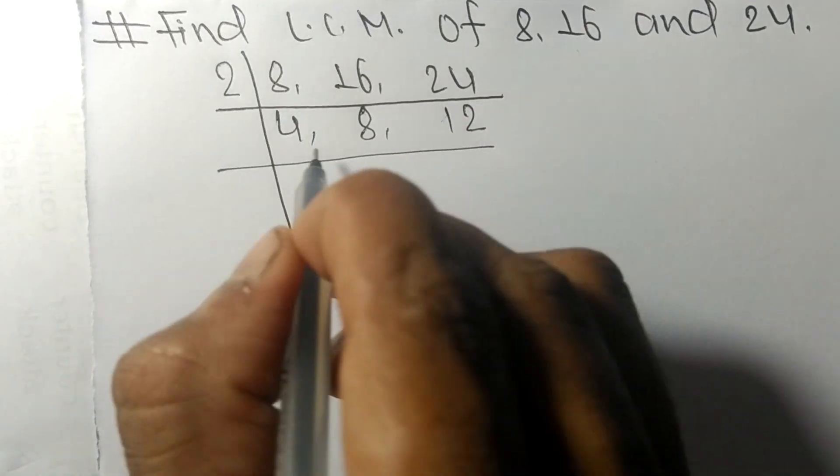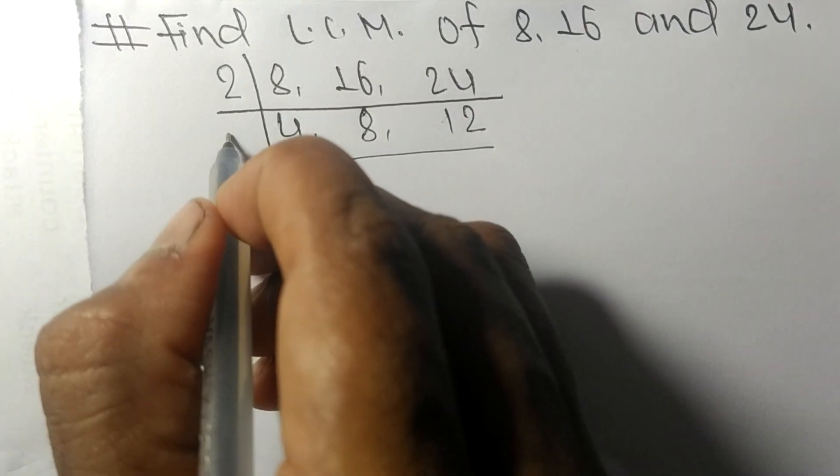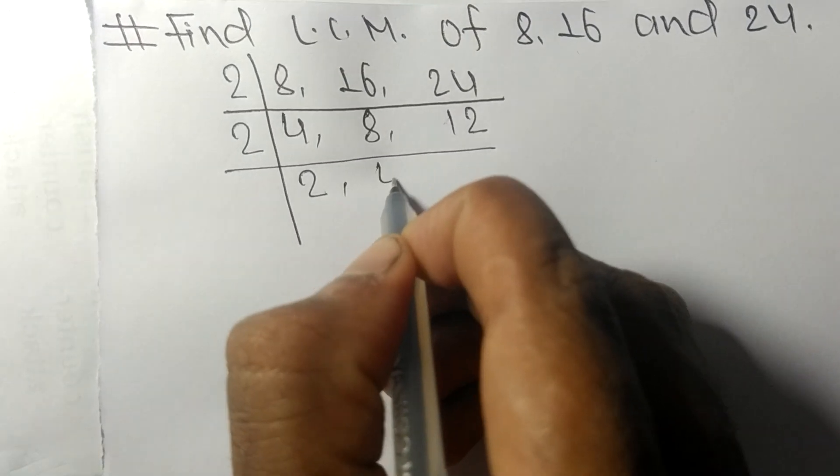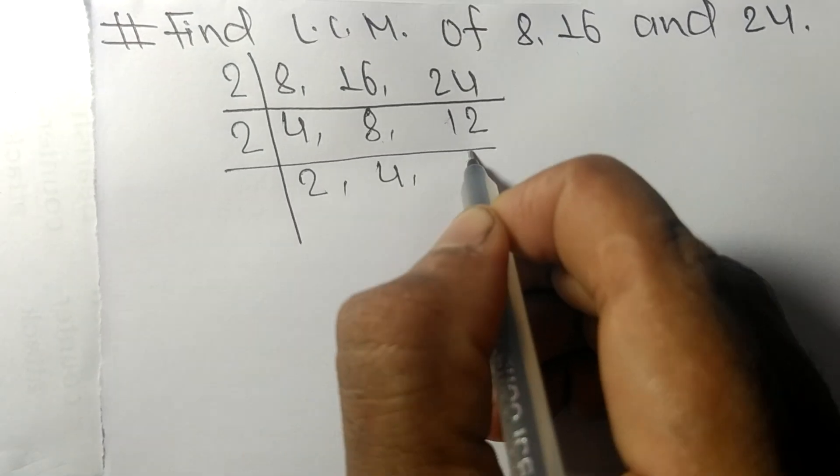Again these numbers are divisible by 2. 2 times 2 means 4, 2 times 4 means 8, 2 times 6 means 12.